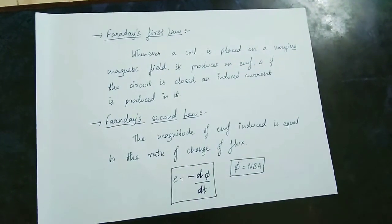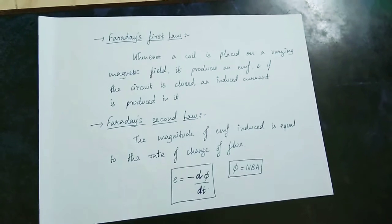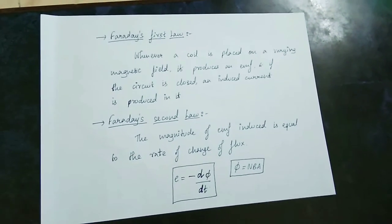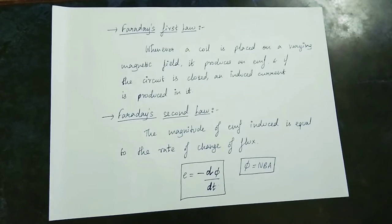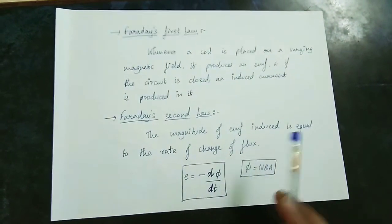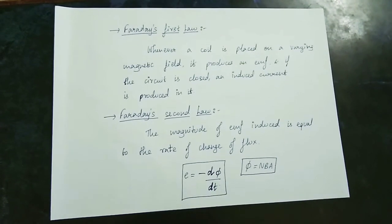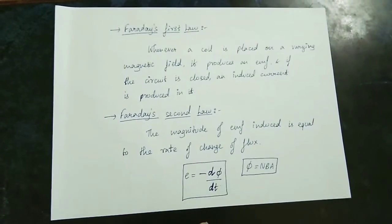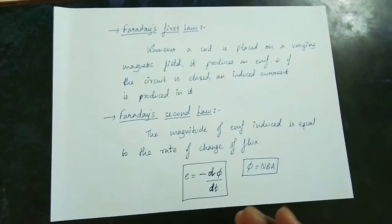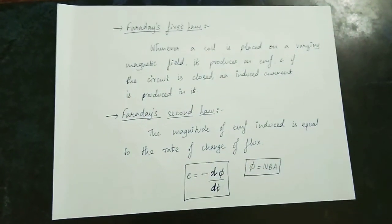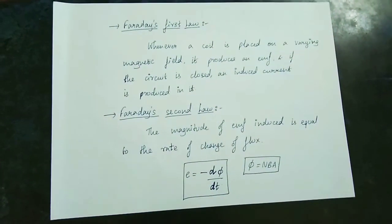The second law is about electromagnetic induction. The magnitude of EMF is equal to the rate of change of flux — induced EMF is equal to the rate of change of flux. The flux variation equals the induced EMF. If you change flux (dΦ/dt), the EMF is automatically induced.